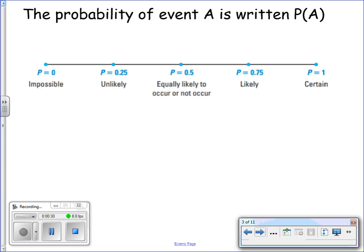The probability of an event, let's say event A, is written as P which is probability and then the event would be in parentheses. So the probability of event A is written as P(A).